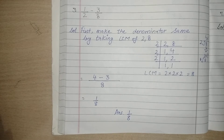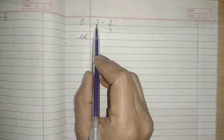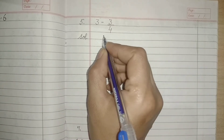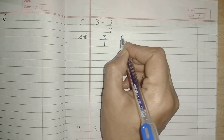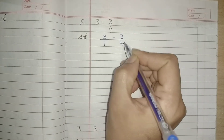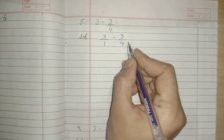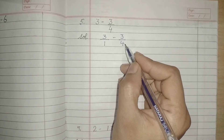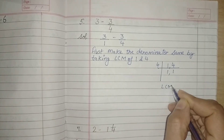Now let's move to the next part. Here it is 3 minus 3 upon 4 — yaani humare paas ek whole number hai aur ek fraction hai. Jab bhi fractions mein whole number given ho, toh hum us ko fraction ki form de dete hain by putting 1 in the denominator, so it looks like a fraction. Now let's make the denominator same by taking LCM of 1 and 4. Simply 1 aur 4 ka LCM 4 hi aayega. So the LCM is 4.